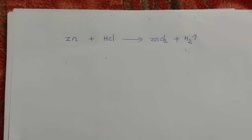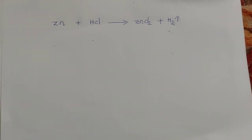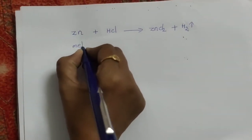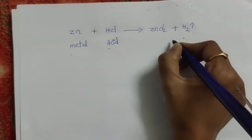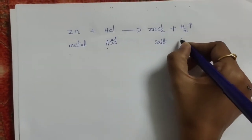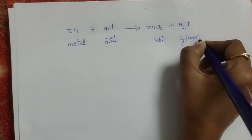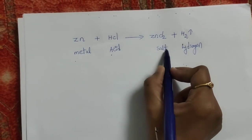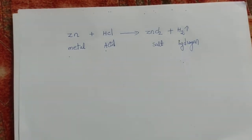Finally we will see this through a theoretical way. Zinc is the metal and HCl is the acid. The reaction gives zinc chloride salt, and hydrogen gas is released. In the test tube, we add zinc metal and HCl, which produces zinc chloride salt and hydrogen gas.